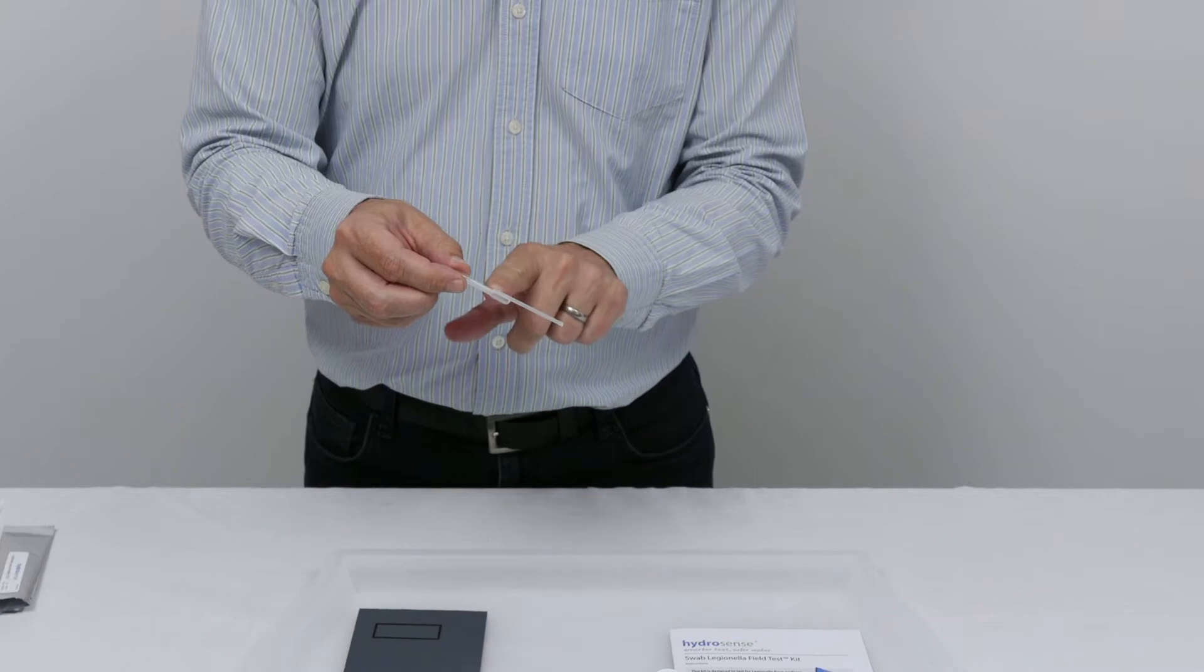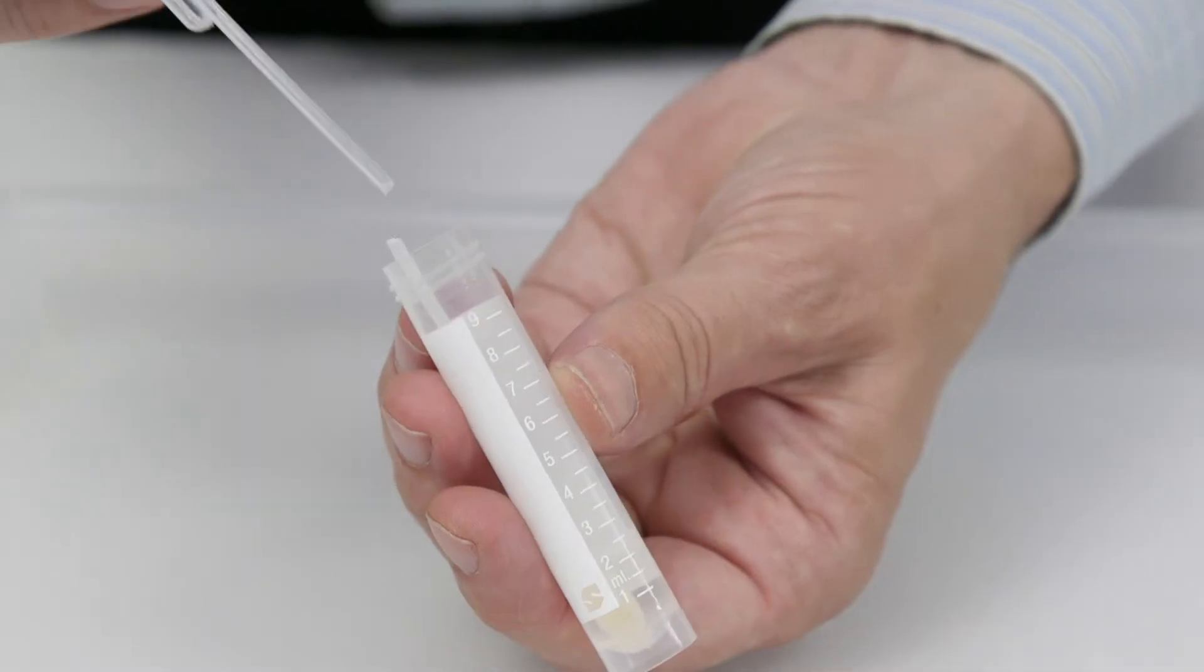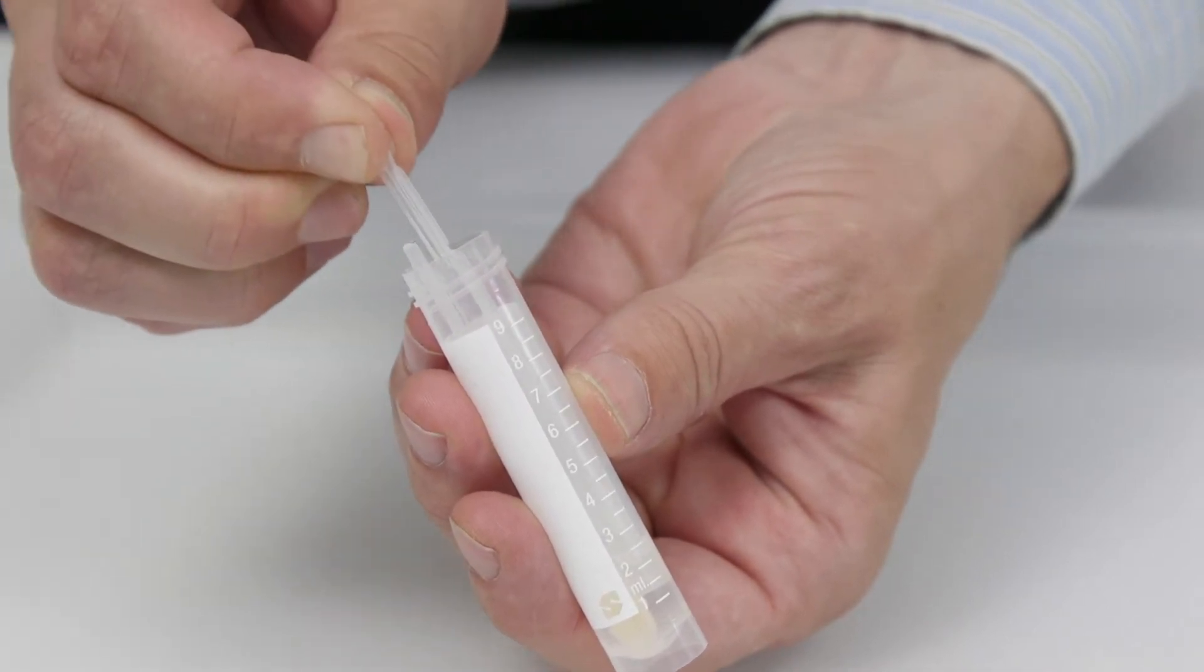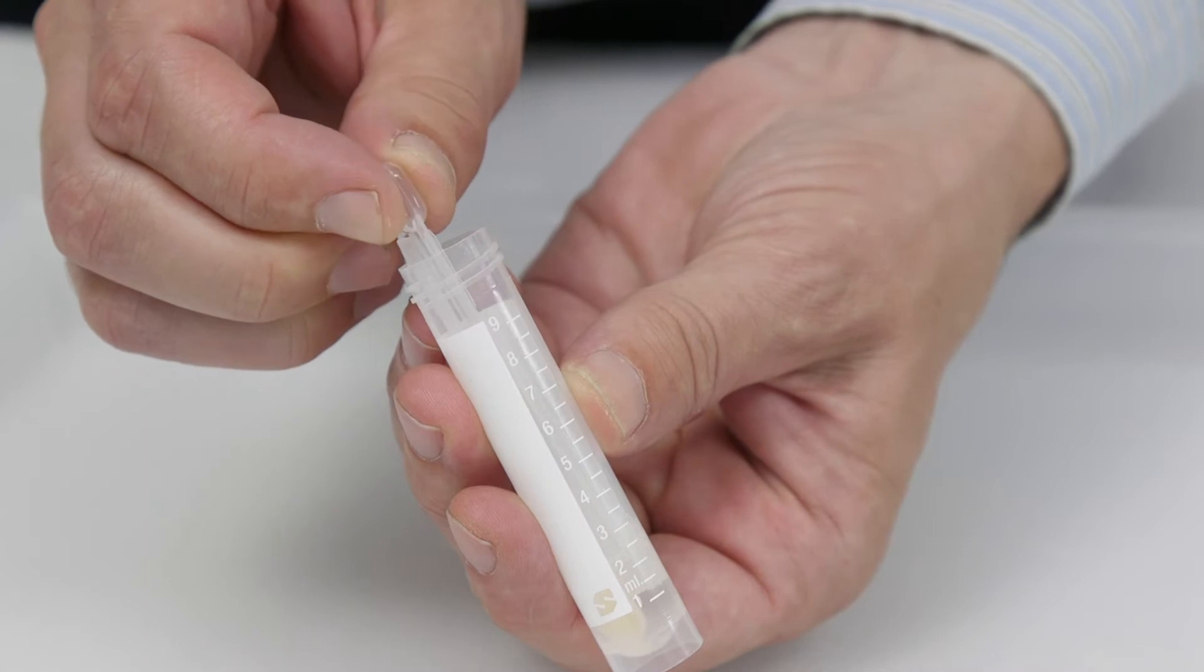When we are using the pipette, we only ever press the top bulb and not the bottom bulb. To take our sample from the vial, remove the lid, press the top bulb in, place the tip of the pipette into the solution, and then release the bulb, drawing up the liquid into the pipette.